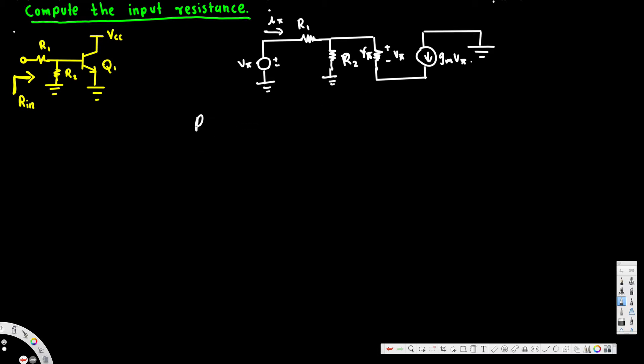We will have negative V phi plus I phi R1 plus I phi. We have R1 and R1. So first of all, we have to know that R in here, R in is equal to V phi over I phi.